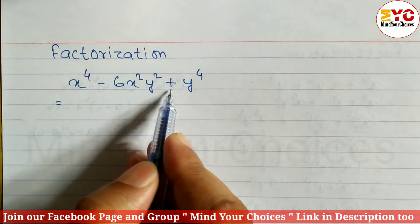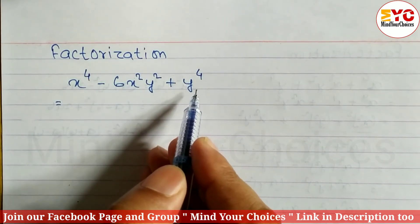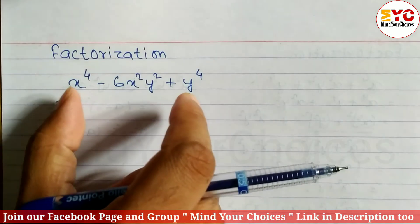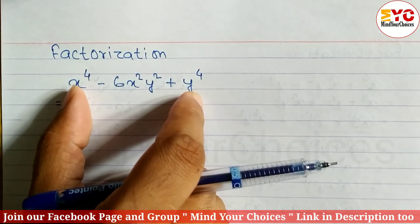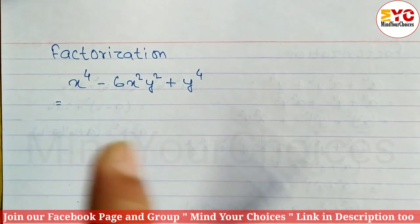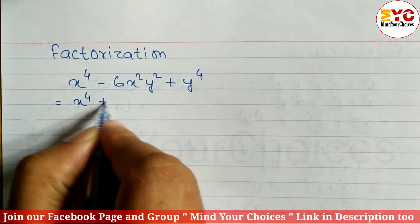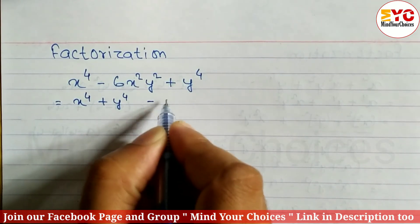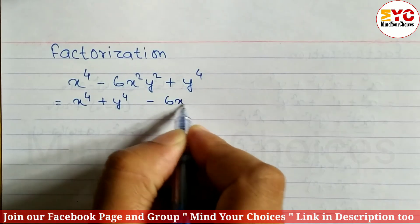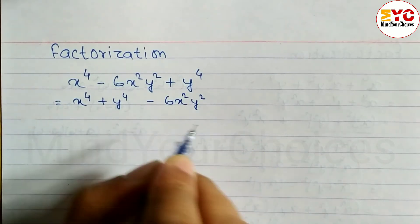In this type of question, we have to take the first and last term and convert them in the form of a squared plus b squared. So we can write here x power 4 plus y power 4 minus 6x squared y squared.